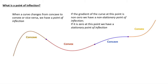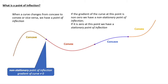This takes us to the definition of a point of inflection: when a curve changes from concave to convex or vice versa, we have a point of inflection. The first type is a non-stationary point of inflection, where the gradient of the curve itself is not zero. If the gradient is non-zero, we have a non-stationary point of inflection; but if it is zero, we have a stationary one.